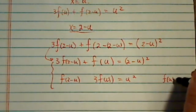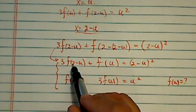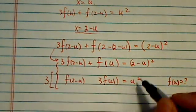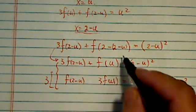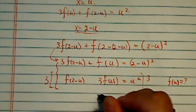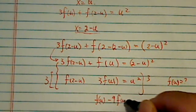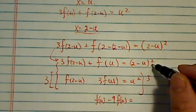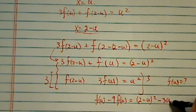So we're going to cancel f(2-u) here by multiplying by 3 on both sides. So I have this side subtracting, then I would have f(u) minus 9f(u) is equal to, let's see, let me make sure, (2-u)² minus 3u².